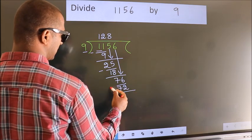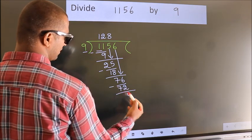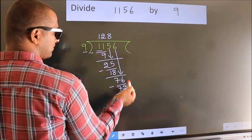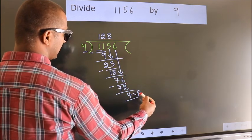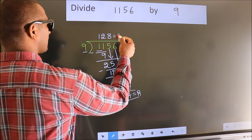Now we subtract. We get 4. No more numbers to bring it down, so we stop here. This is our remainder. This is our quotient.